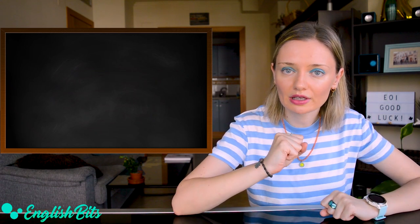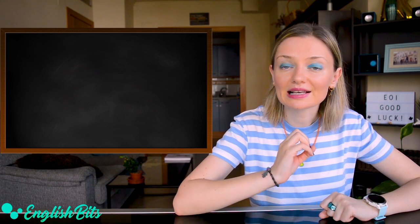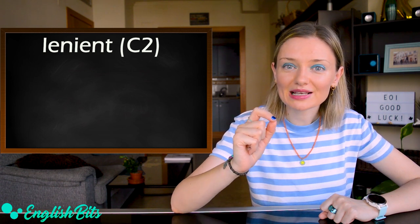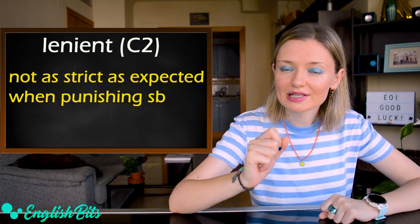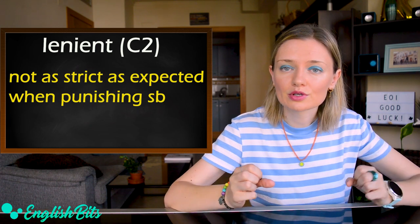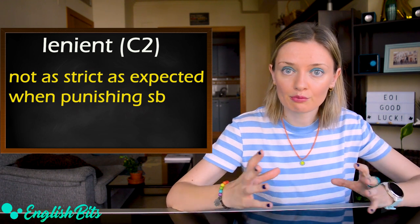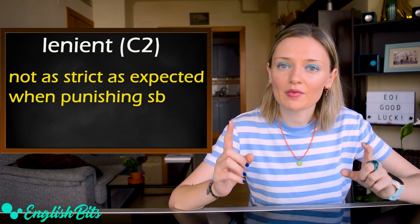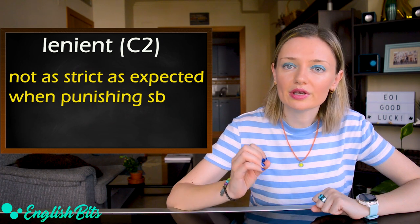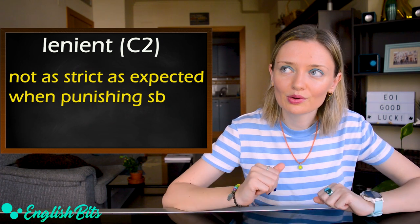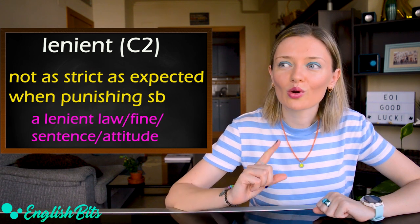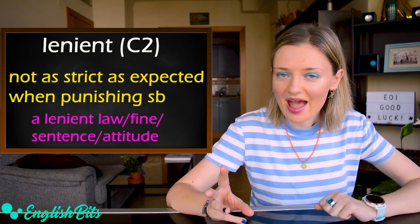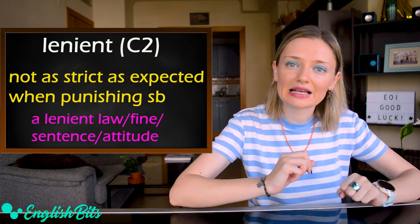The first C2 adjective I want to teach you today is 'lenient' — lenient. It means not as strict as expected when it comes to punishing somebody. For example, if your topic is about crime, you could use this adjective. Some nouns that are usually used with it are: a lenient law, a lenient fine, sentence, or attitude. The opposite of lenient is severe.